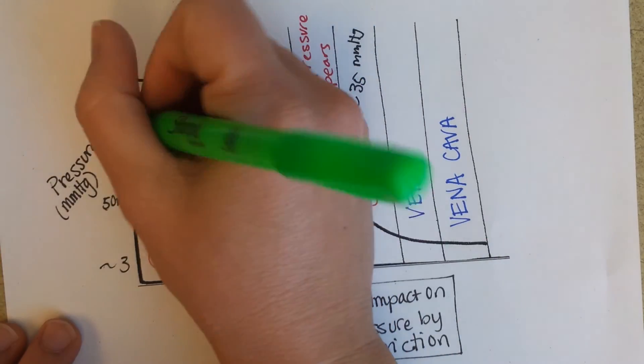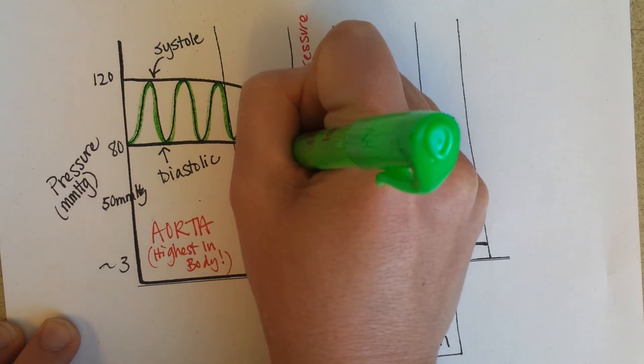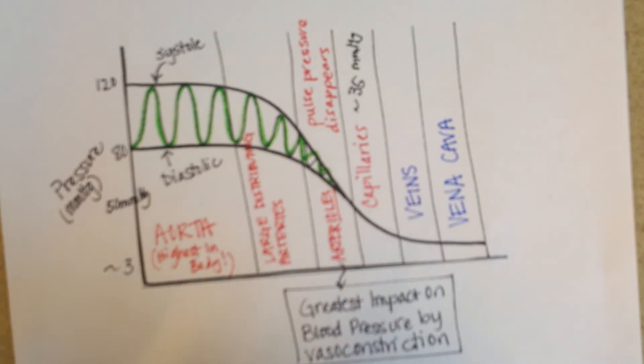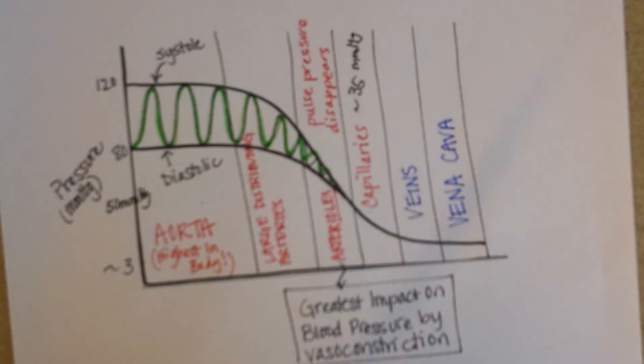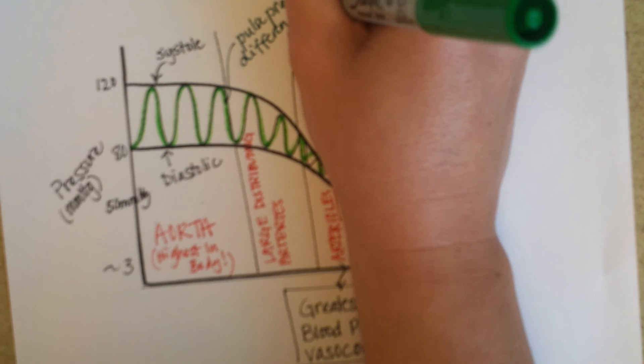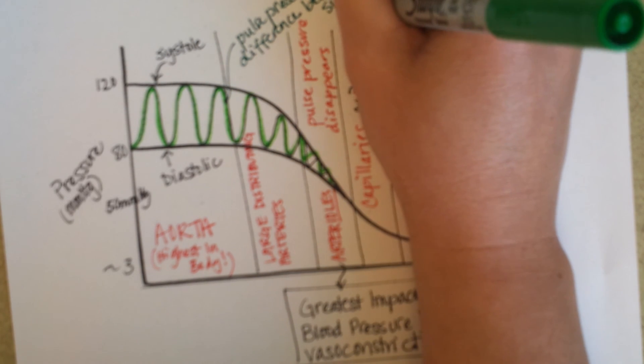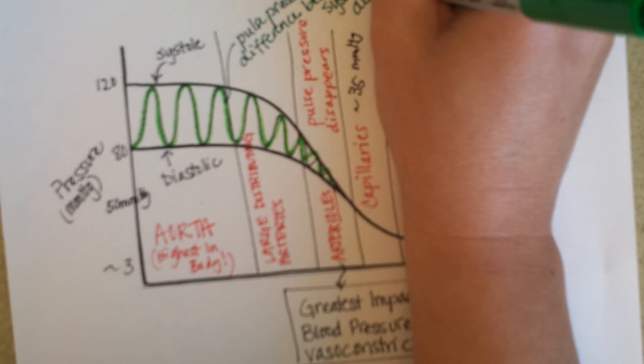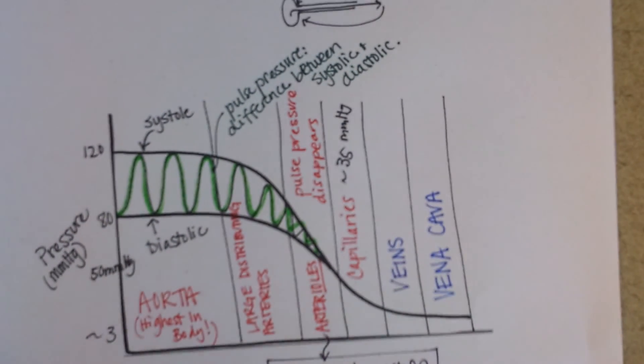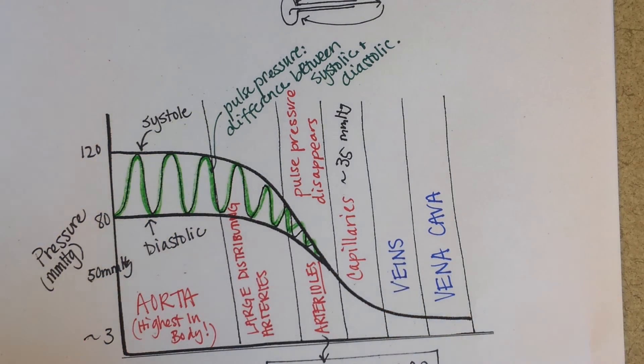Let's use a green highlighter to highlight the pulse pressure. Oops, sorry, you couldn't see that. So the pulse pressure is the difference, pulse pressure, difference between systolic and diastolic values.